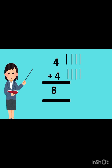Now count by yourself: four and four. We will draw four lines in front of four and four more lines. Now we will count all together: one, two, three, four, five, six, seven, eight. It is so simple.